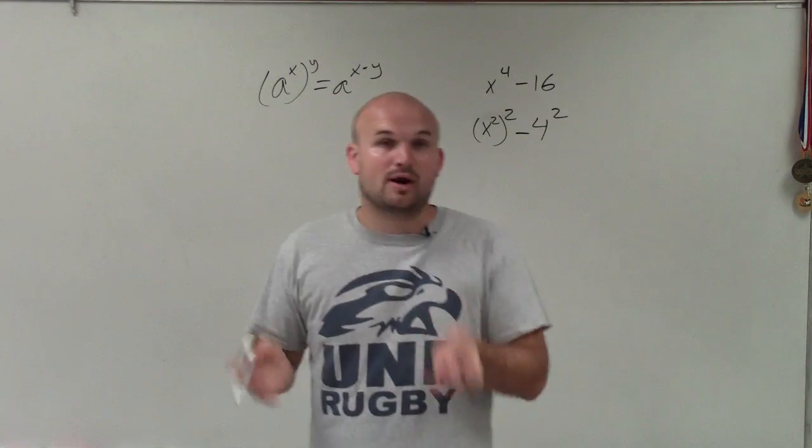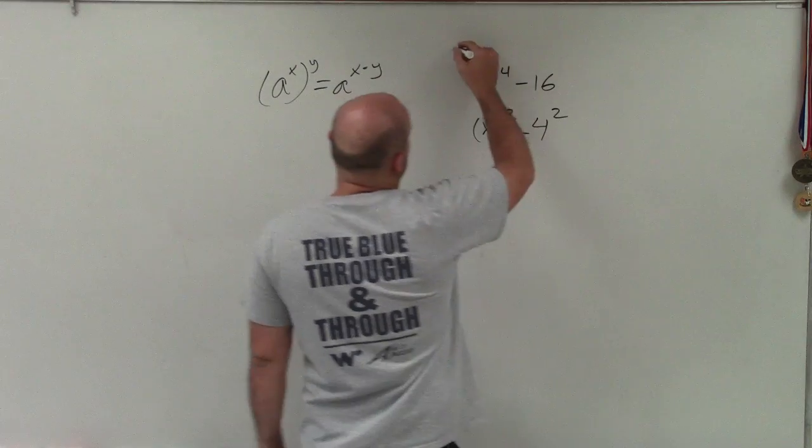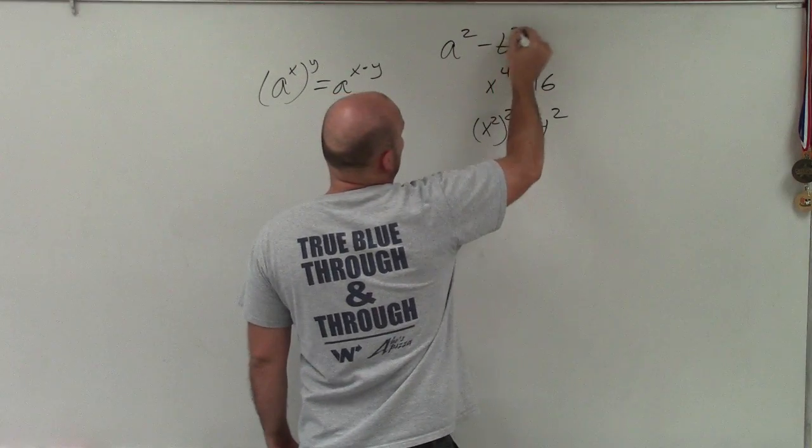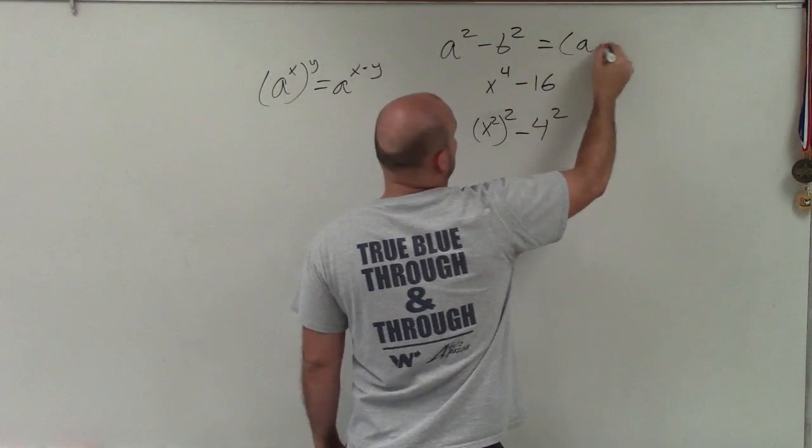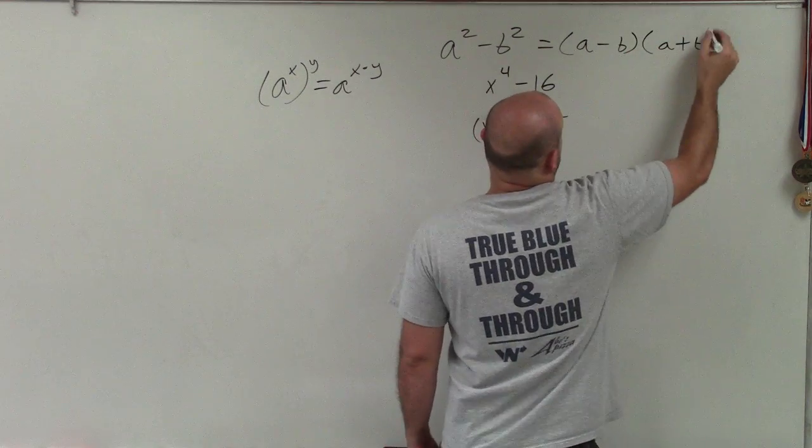So since I have a square term minus another square term, I can go into my bank and say, all right, well, then I have the difference of two squares, which can factor into a minus b times a plus b.